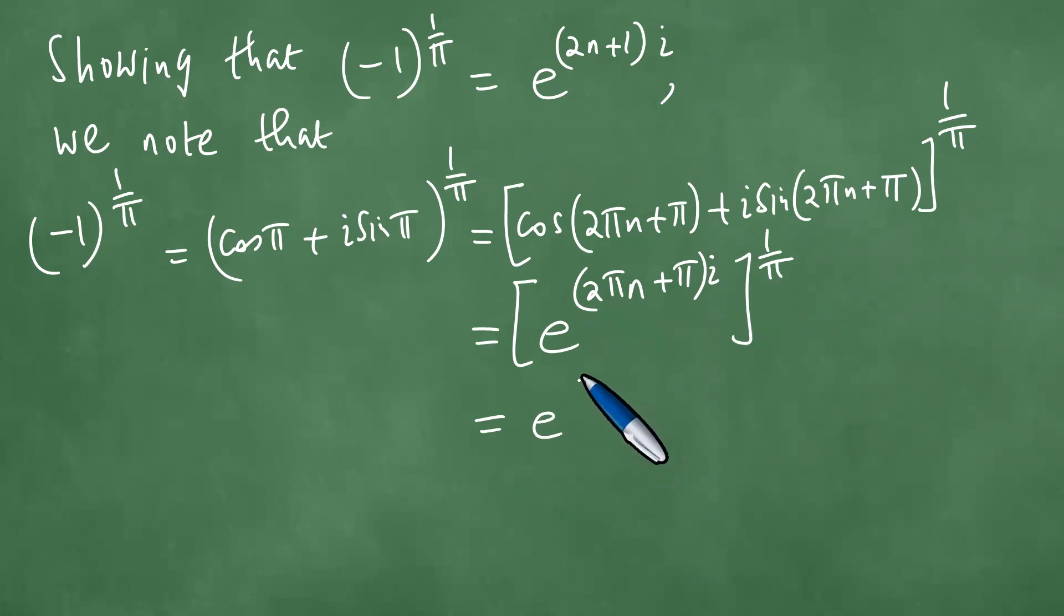So, now, you're going to pull out pi. So, getting 2n plus 1 times i, and you have outside 1 over pi. Right, so this is e to the power pi into 2n plus 1 times i divided by pi. So, what is this? Hence, this is exactly e to the power 2n plus 1 times i.